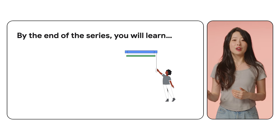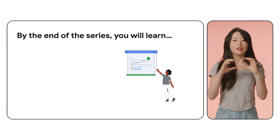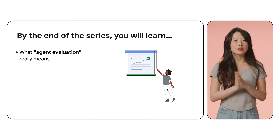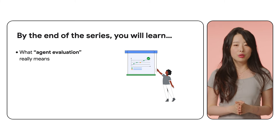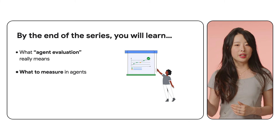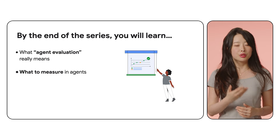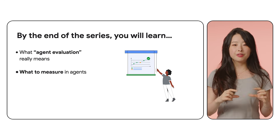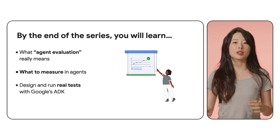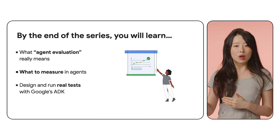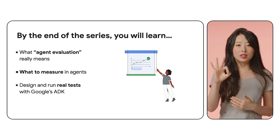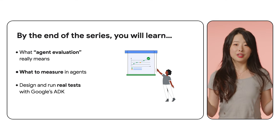In this video series on agent evaluation, we will explore why traditional ways of testing fail for AI agents and what agent evaluation really means. We will also cover what to evaluate in agents — from reasoning and tools to memory and safety. And lastly, we will cover how to design and run real tests with Google Agent Development Kit, using a three-tier testing pyramid to structure your evaluation.